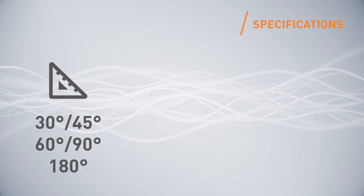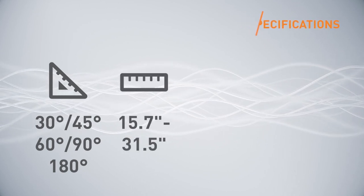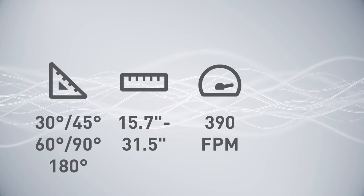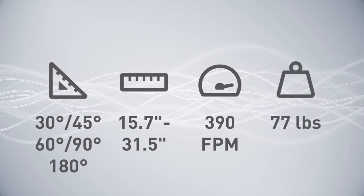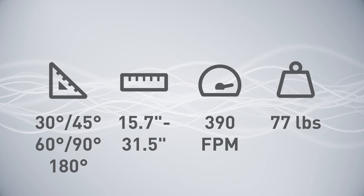CB80 Conveyors are available with a choice of five angles and widths up to 31.5 inches. They support speeds up to 390 feet per minute and loads up to 77 pounds, making them ideal for a wide variety of applications.